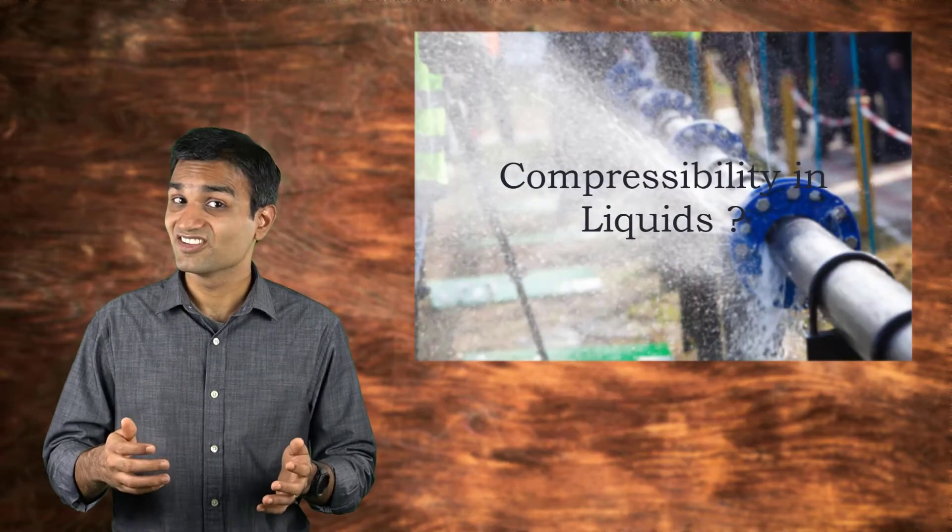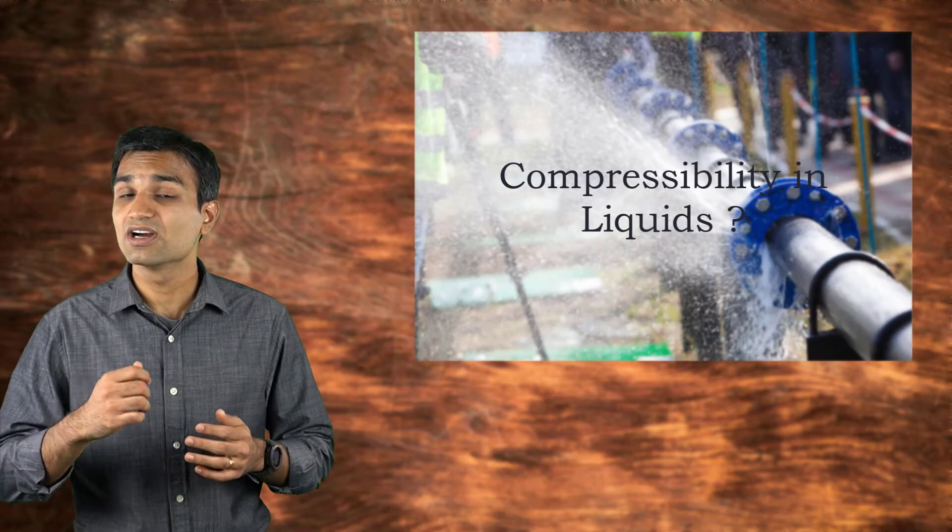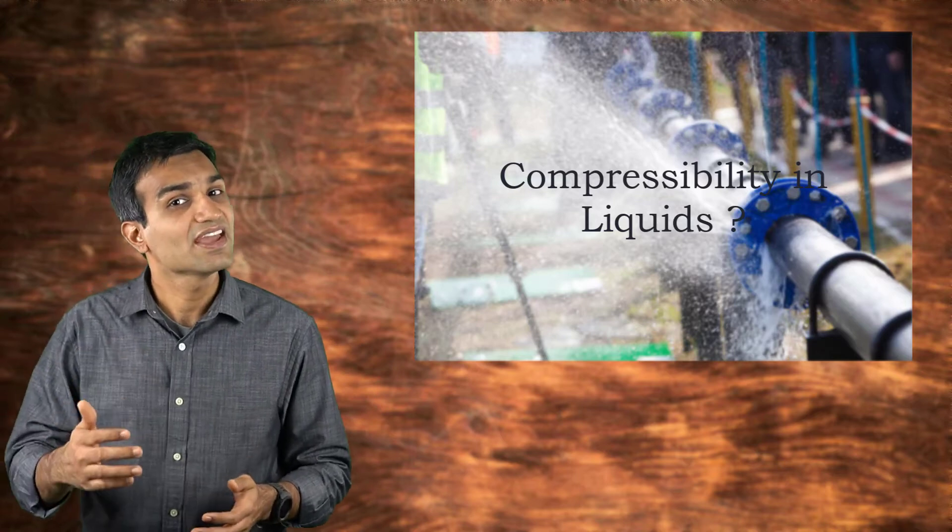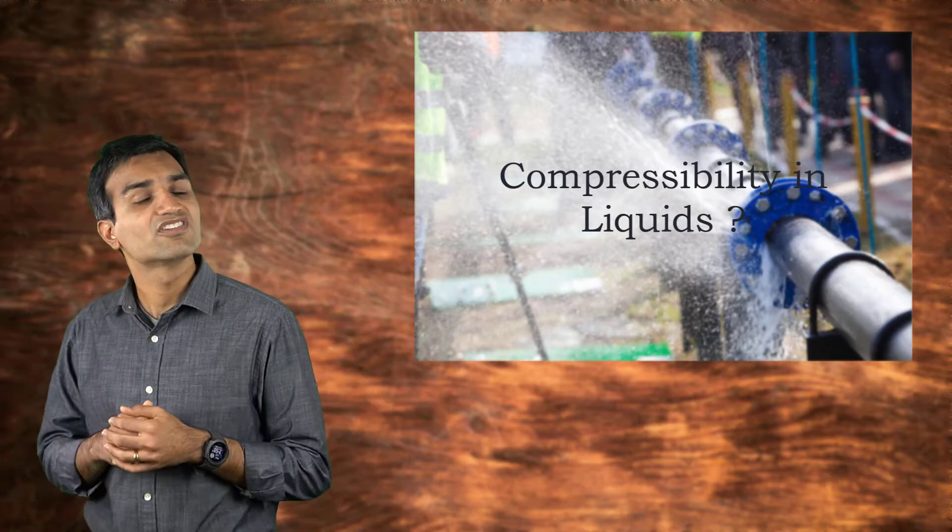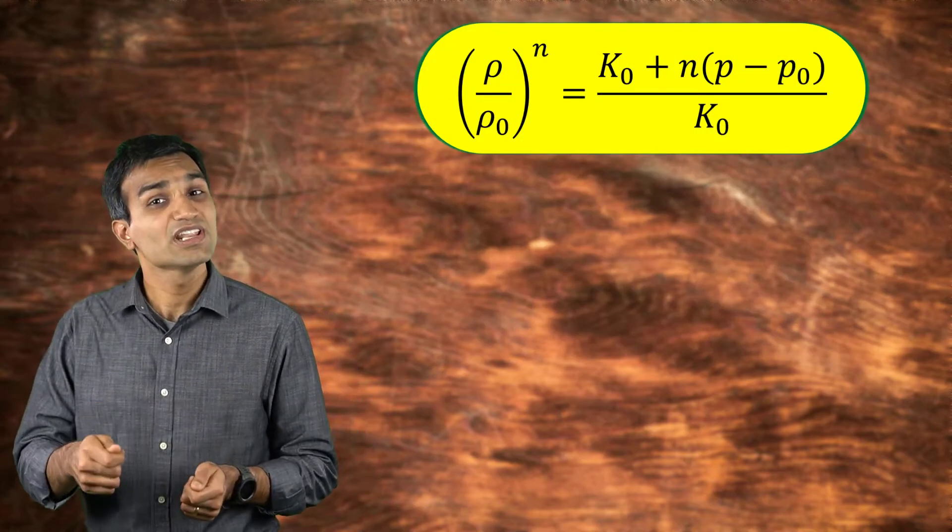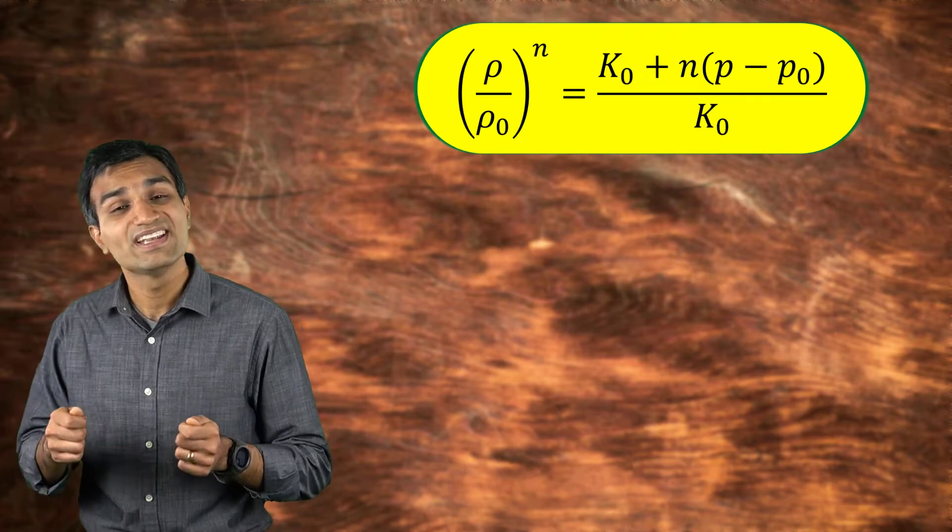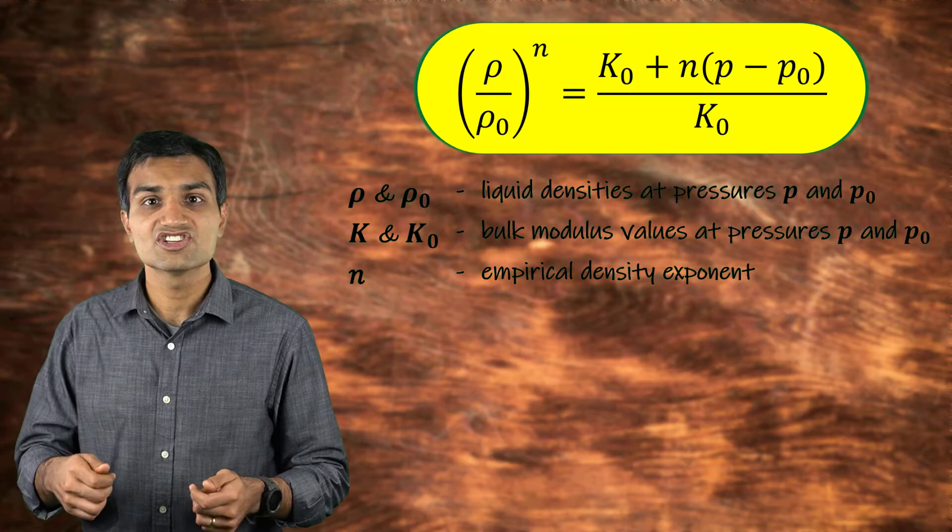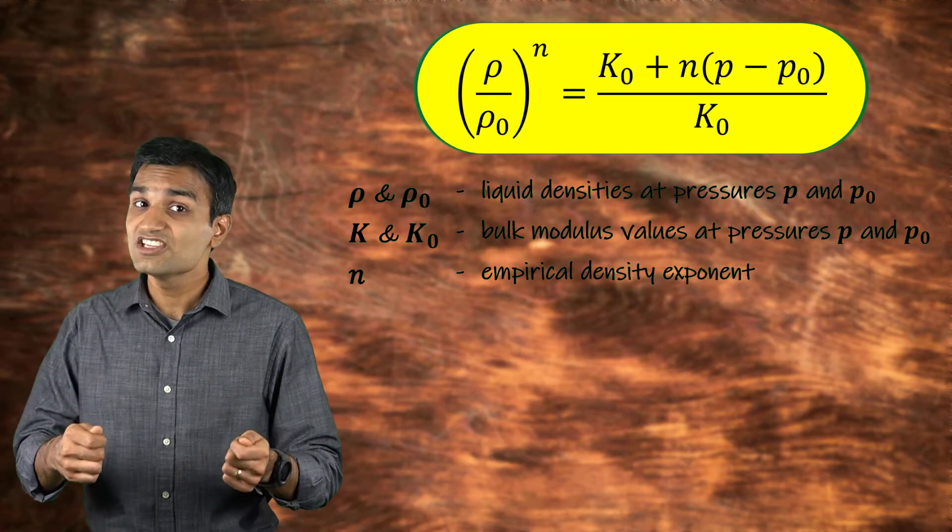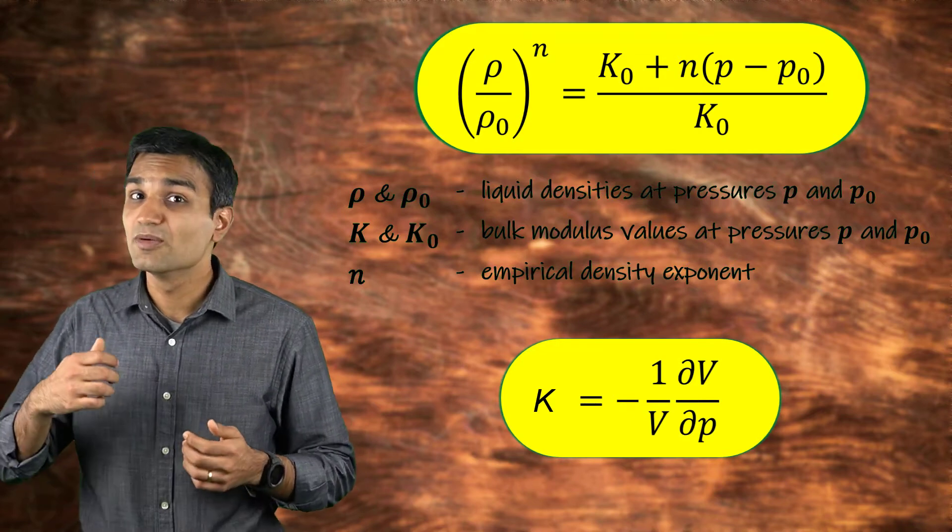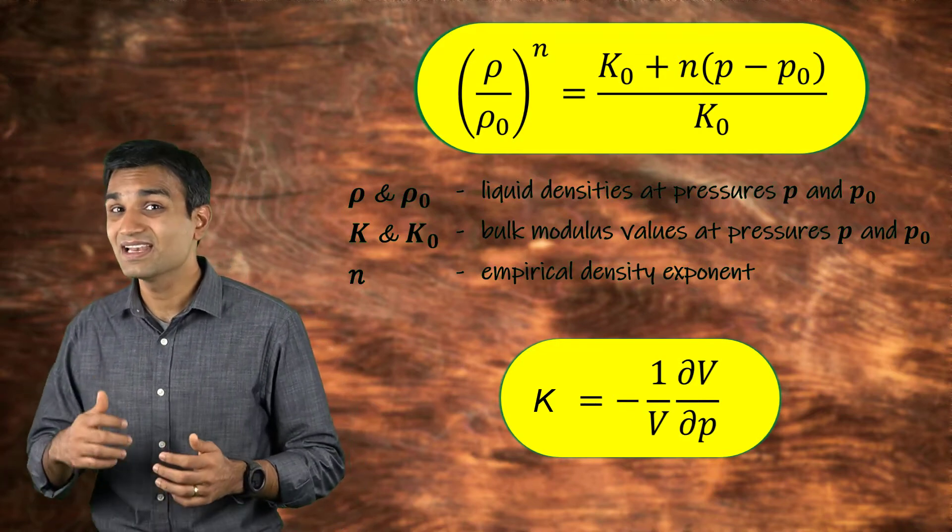In certain applications involving underwater acoustics and water hammers in pipes, liquids too behave like compressible fluids. In these applications, Tate's empirical equation is used to relate pressure with the liquid density. Here, the relative change in density of the liquid due to changes in pressure is given by a parameter called the bulk modulus and is defined as follows.